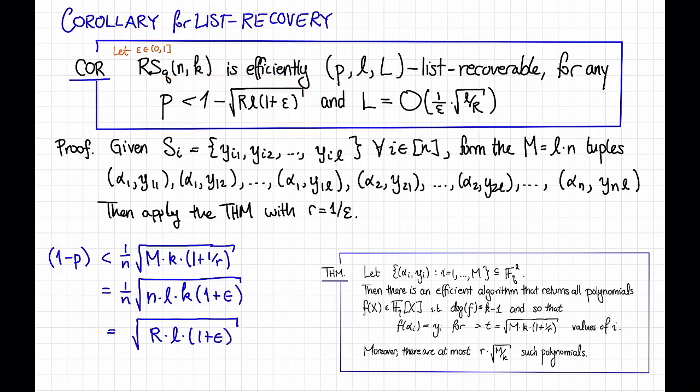Great. So we've established that Reed-Solomon codes are efficiently list-recoverable up to some list-recovery version of the Johnson bound. That's cool. You might be wondering, though, why do we care? It turns out that list-recovery has tons of applications. In the next few videos, we'll see one such application to streaming algorithms.